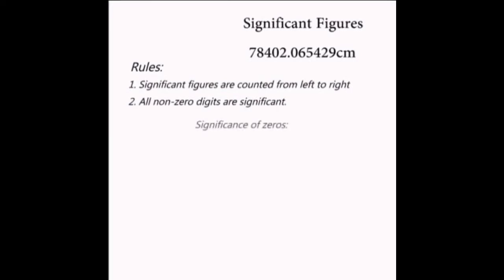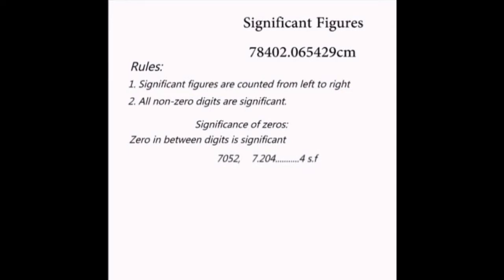Zero may or may not be significant depending on its position in the number. If a zero occurs in between non-zero digits, then it is significant. For example, 7052 and 7.204 both have four significant figures.